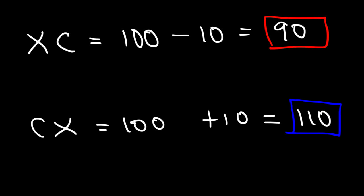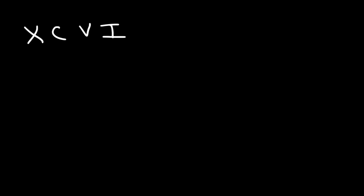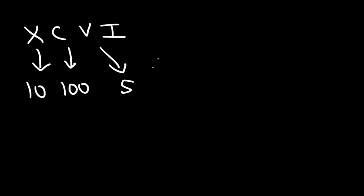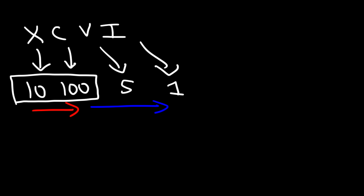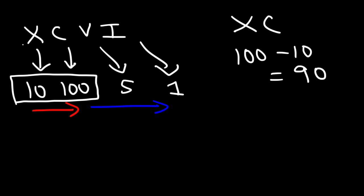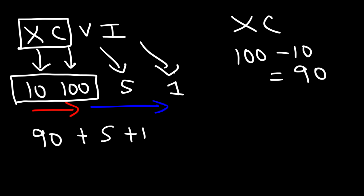Now let's try a harder example: XCVI. X is 10, C is 100, V is 5, I is 1. Notice that XC has numbers increasing, so we need to subtract: XC represents 100 minus 10, which is 90. Then V and I are in descending order, so we add: 90 plus 5 plus 1 equals 96.